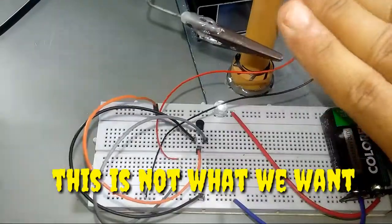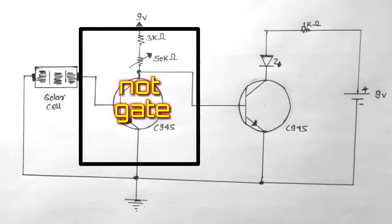We want the circuit to activate when there is no light over the solar cell. So you should have to add a NOT gate to do this.